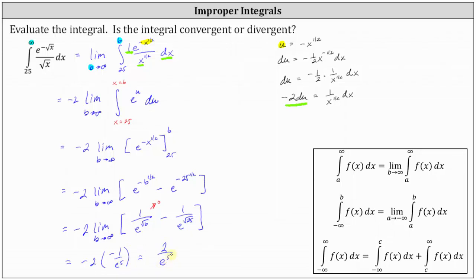Because the limit exists and we have a real finite value for the improper integral, we say the integral is convergent, or converges. If the limit did not exist because it approached positive or negative infinity, we would say the integral is divergent or diverges. I hope you found this helpful.